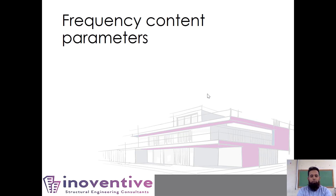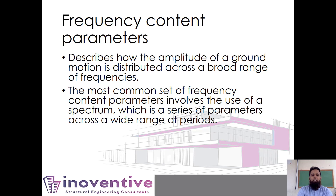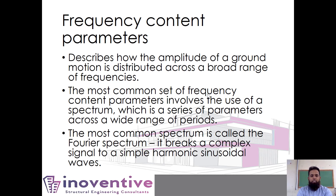This brings us to frequency content parameters — essentially the concept of resonance. Everything has a natural frequency. We find the frequency content of ground motion and check if it is going to cause anything to resonate. The frequency content describes how the amplitude of the ground motion is distributed across a broad range of frequencies or periods. The most common frequency content parameter involves the use of a spectrum. The most common spectrum is the Fourier spectrum, which comes from a Fourier series that breaks a complex signal into a summation of simple sinusoidal waves.